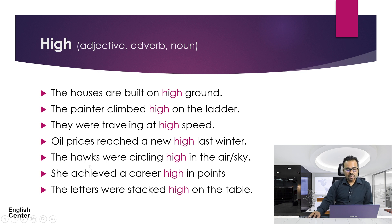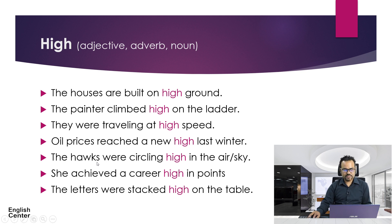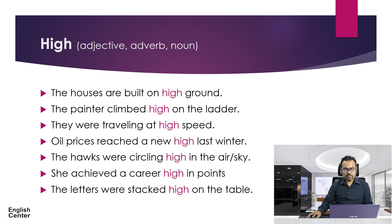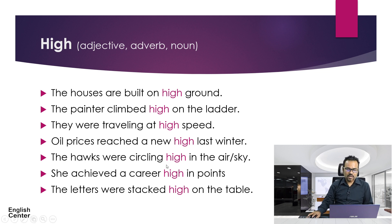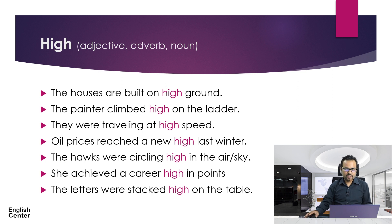Next example: The hawks were circling high in the air, or in the sky. So 'high' is an adverb here. Why? The subject is 'hawks' — they were circling, they were moving where? They were moving high, up in the sky. So 'high' gives the answer to 'where'. As I told you before, if we ask the question with 'where', 'when', 'how', or how often, and we get an answer, that answer is an adverb. So this one is an adverb.